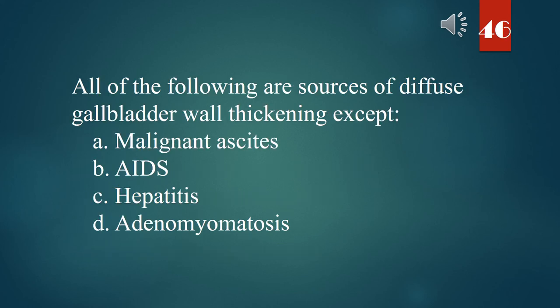All of the following are sources of diffuse gallbladder wall thickening except: A. Malignant ascites. B. AIDS. C. Hepatitis. D. Adenomyomatosis. The answer is C. Hepatitis.